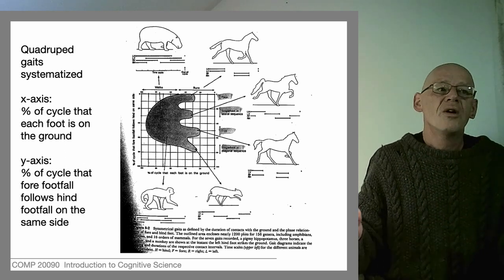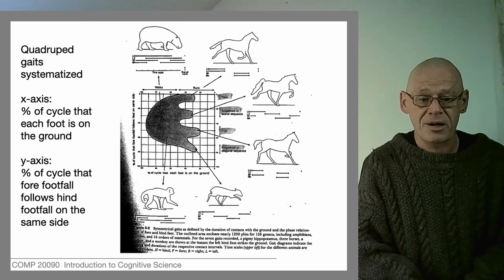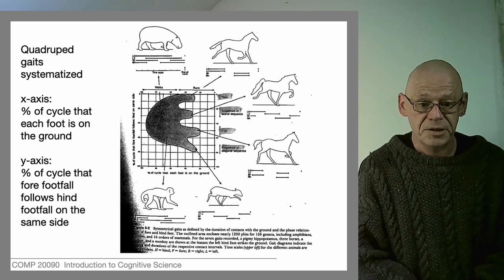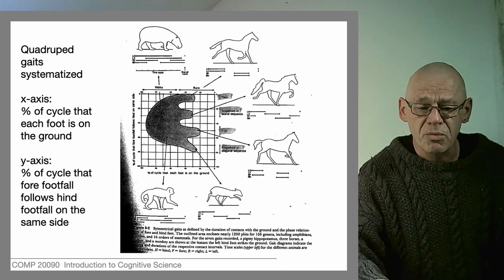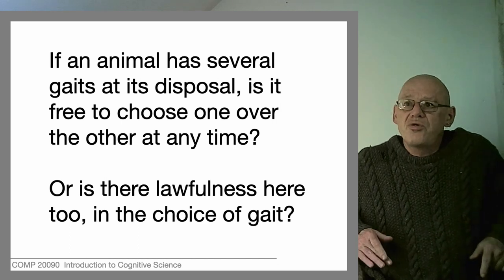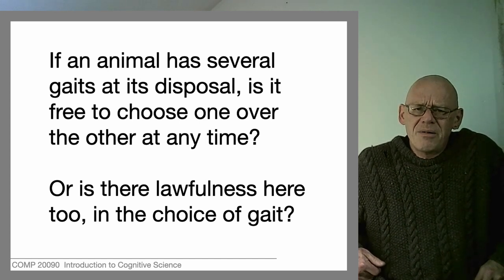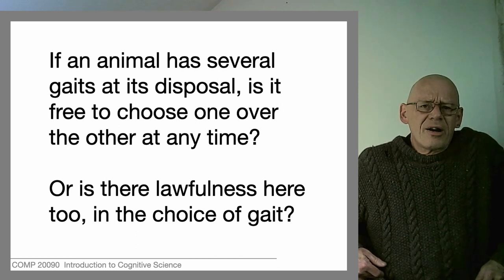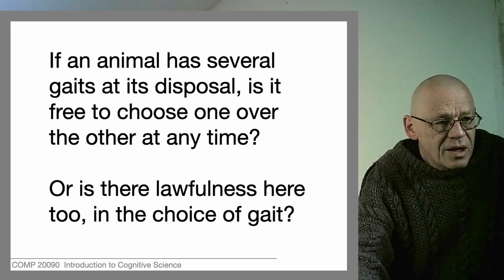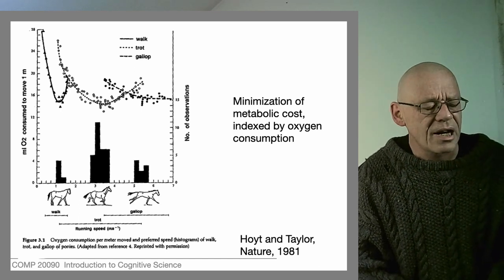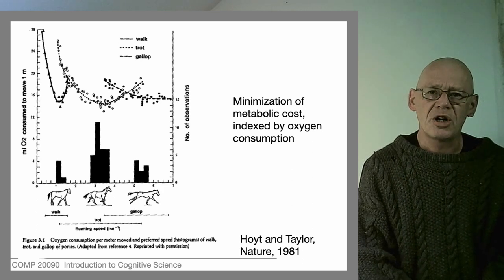We're beginning to get a strong feeling that this notion of coordination expressed as phase among oscillating parts is going to be a powerful way to describe animal movement. Now, if an animal like a horse has multiple gaits at its disposal, one question we might ask is: is it just free to choose what to do at any given moment, or — as scientists — is there some kind of lawfulness? Can we say something more than 'the horse decided to trot one day and canter the other'? Here's an excellent scientific visualization from a 1981 paper in Nature by Hoyt and Taylor.